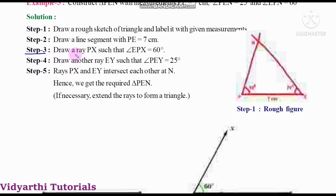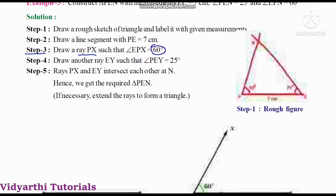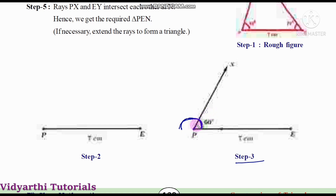Step 3: Draw a ray Px such that angle EPx is equal to 60 degrees. Observe here — this is the PE line segment from Step 2. We draw a straight line — this is the Px ray.